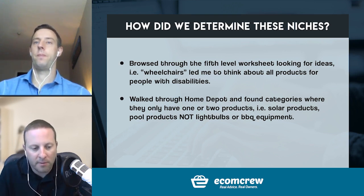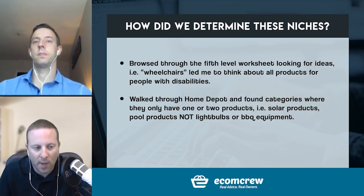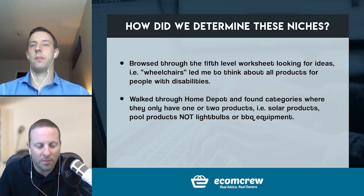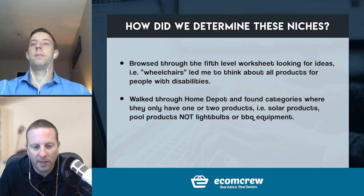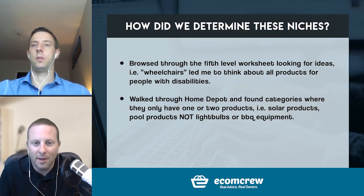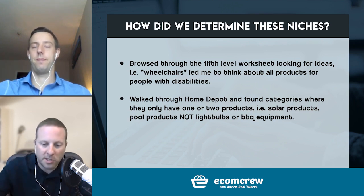Before we get into the five different niches, there will be a lot of dead ends and you can't let yourself get frustrated. This is relatively easy, but there will still be a lot of dead ends. You'll start going through the fifth level worksheet or walk up and down Home Depot's aisles and never quite find the perfect thing. You can analyze something to death to find the exact perfect thing — nothing's ever perfect in life. You want to look for something that's like 90–95% good and run with it. Let's dig in.